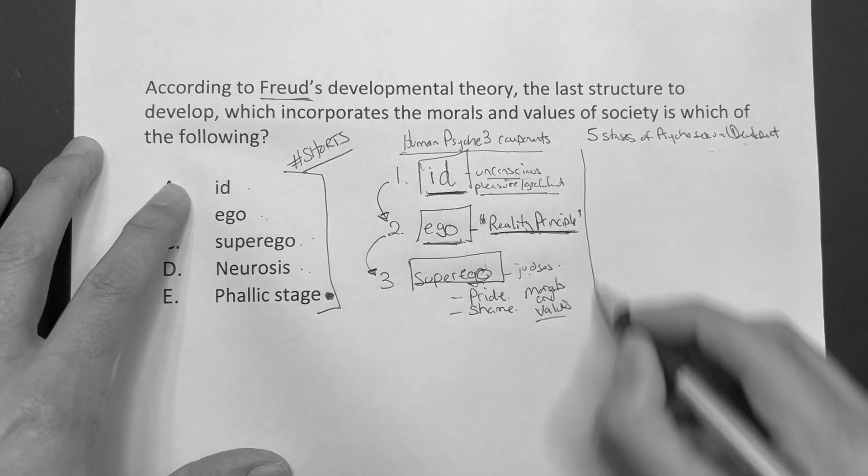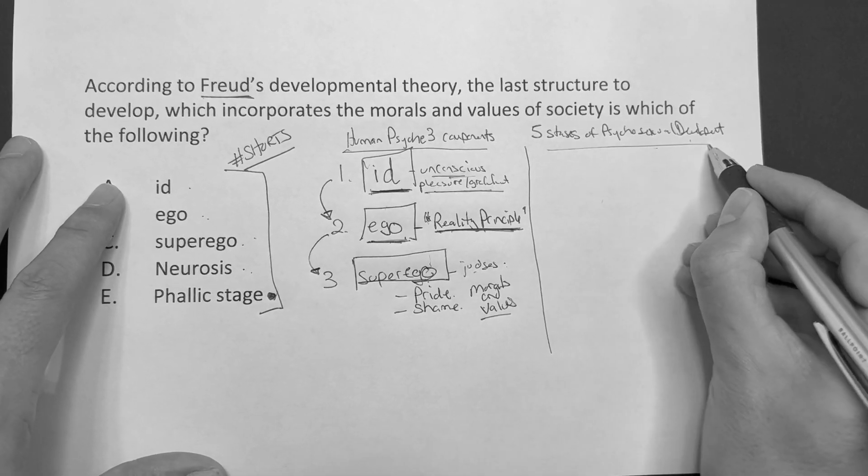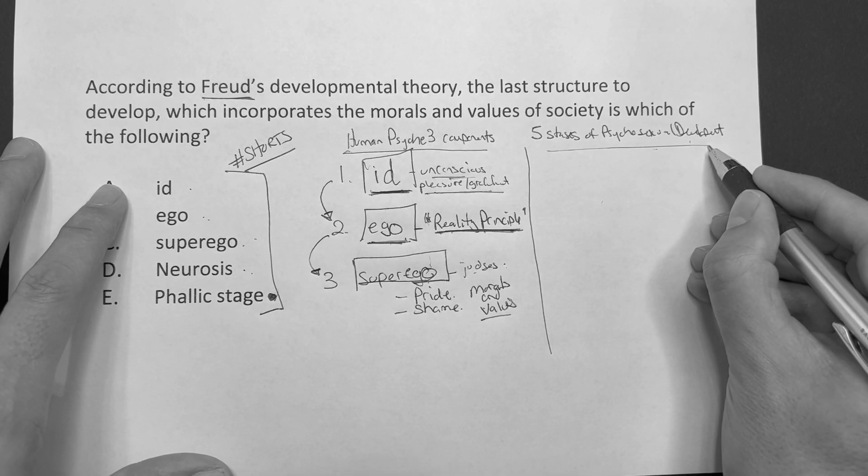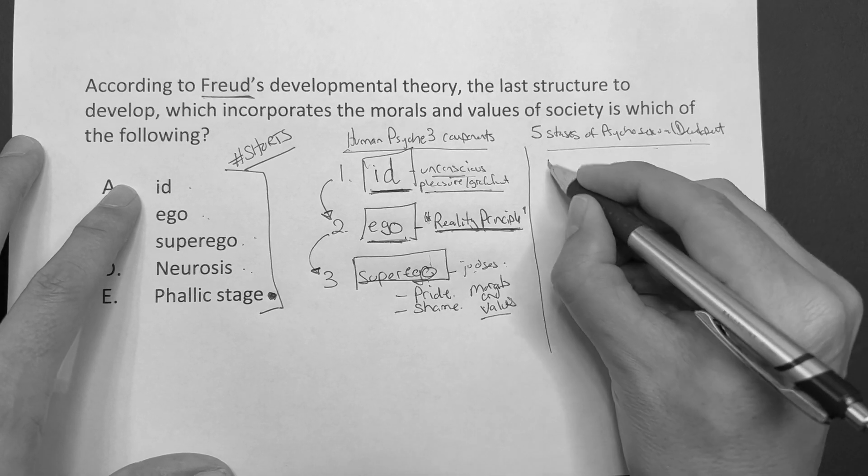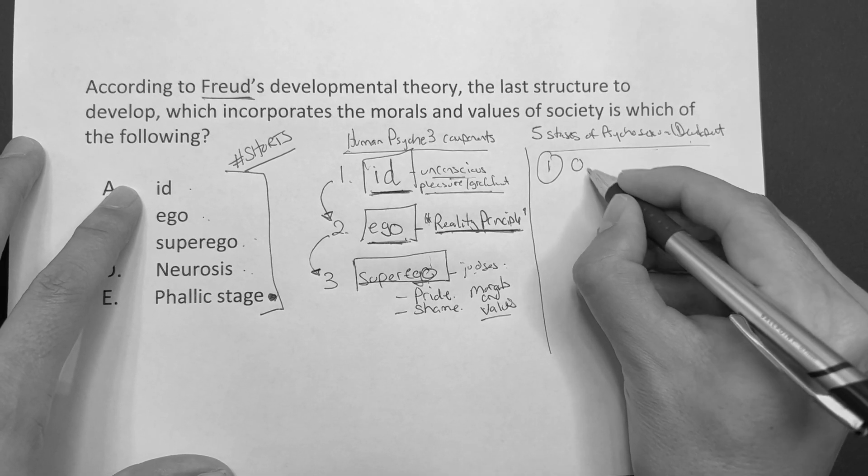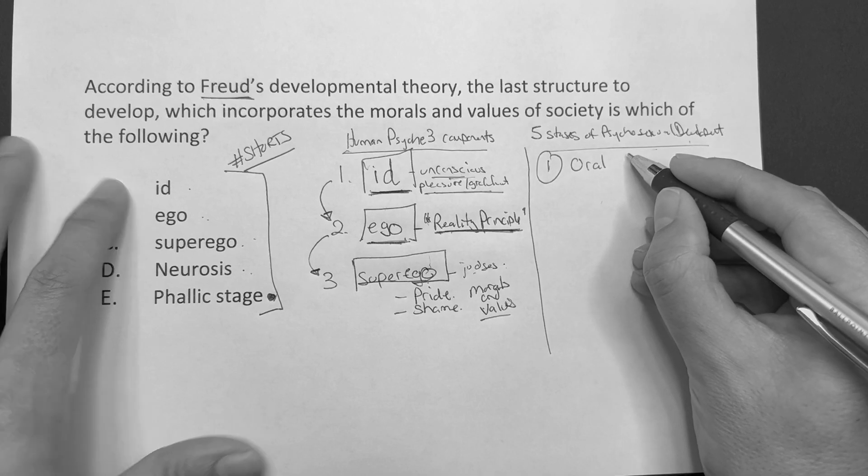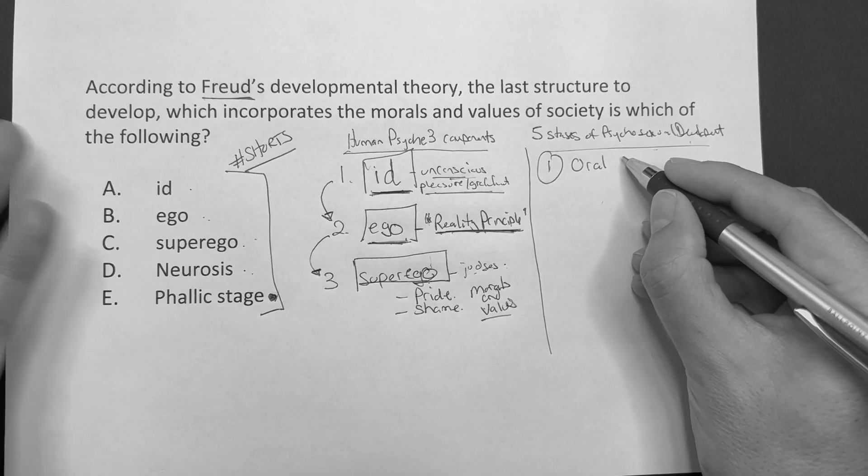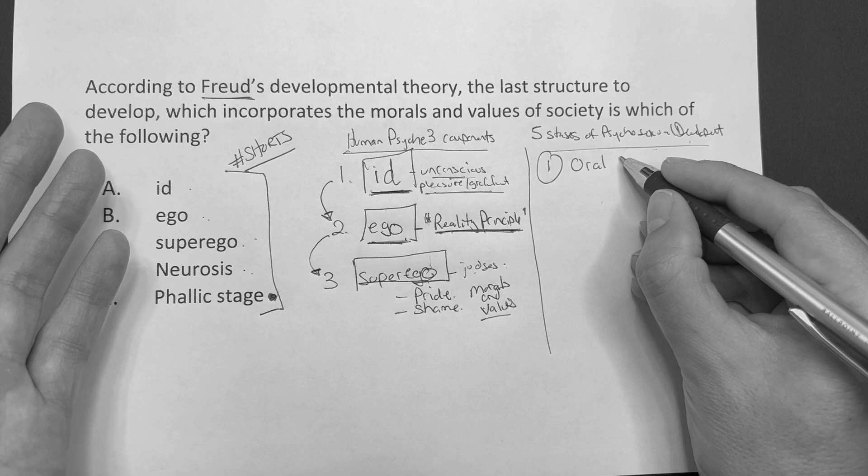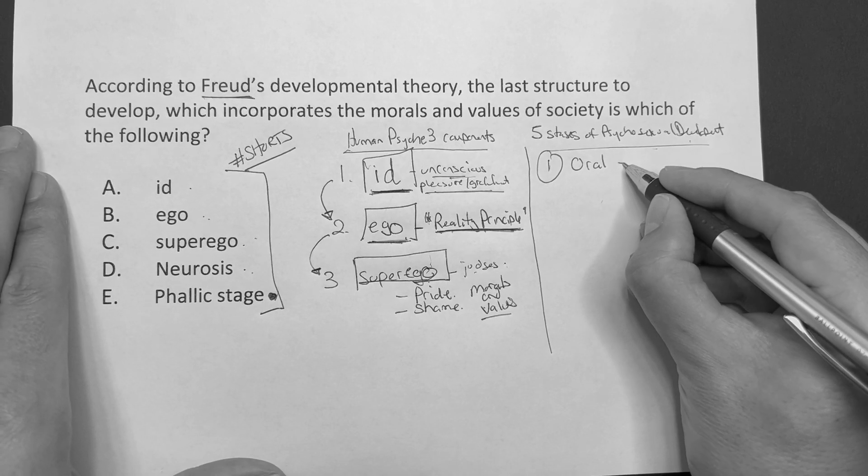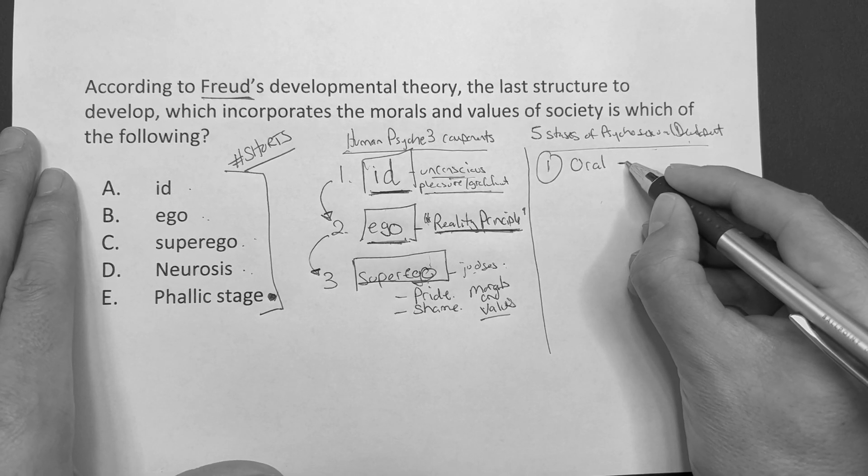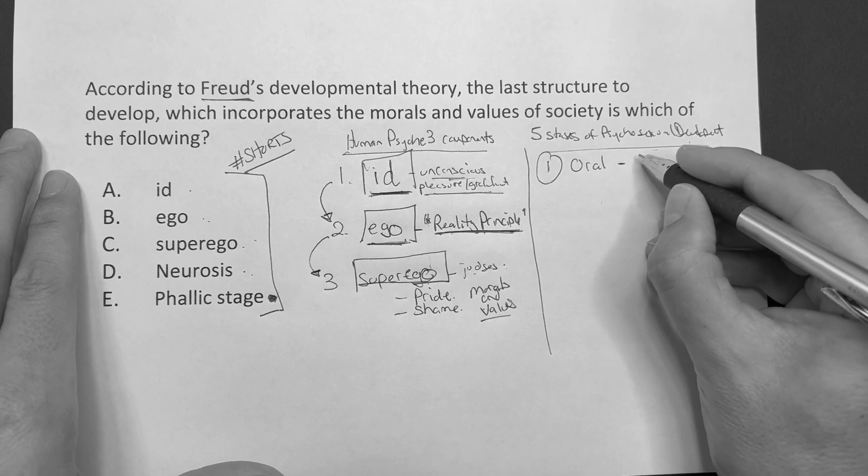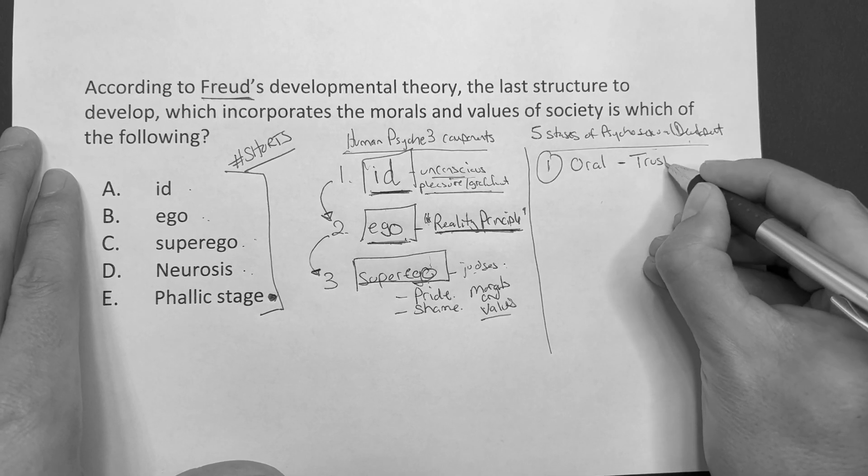Now Freud also said, look, there's five stages of psychosexual development. We got the oral phase, right? At birth, if it's breastfeeding, the kid wants to do everything with their mouth. So if you're successful during this phase and you have a good caregiver, you developed trust.